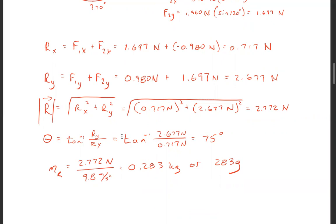Now what is that, 2.772 Newtons? What is that in grams? It's 2.772 Newtons divided by 9.8 meters per second squared. That gives me 0.283 kilograms or 283 grams.